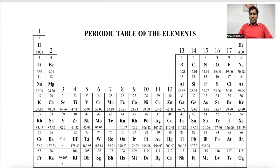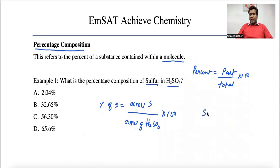On the periodic table, sulfur is located below oxygen. The atomic weight of sulfur is 32. In H₂SO₄ there is only one atom of sulfur, so we calculate it as 1 times 32. The formula also contains hydrogen — there are two hydrogen atoms, and the atomic weight of each hydrogen is 1.